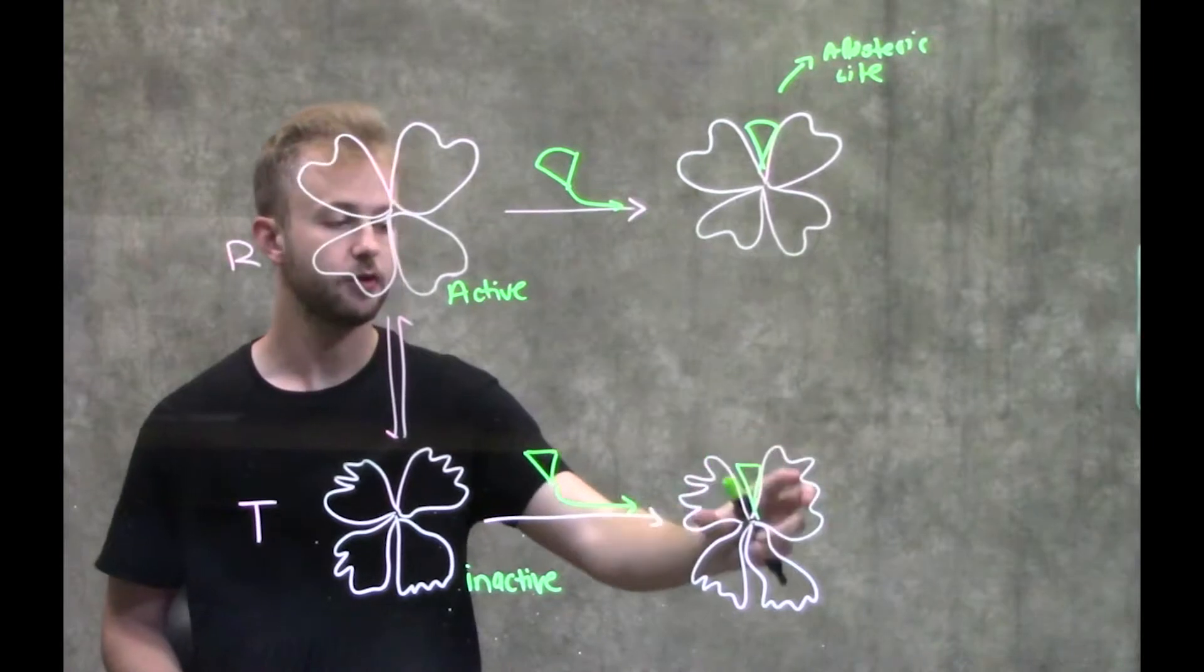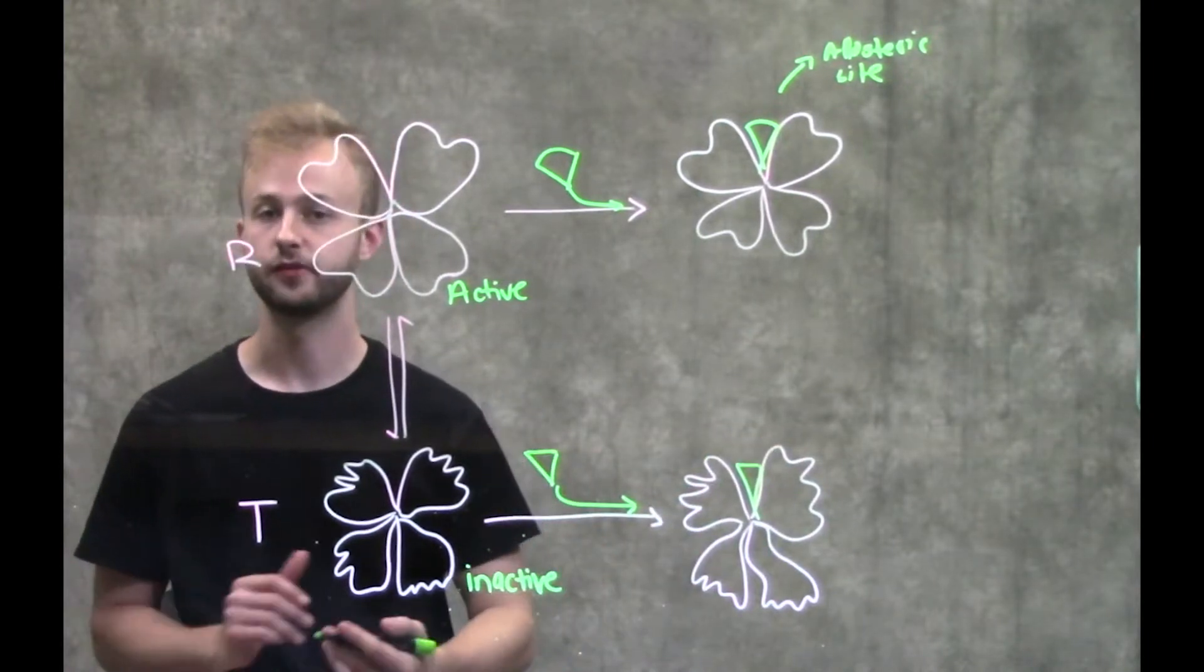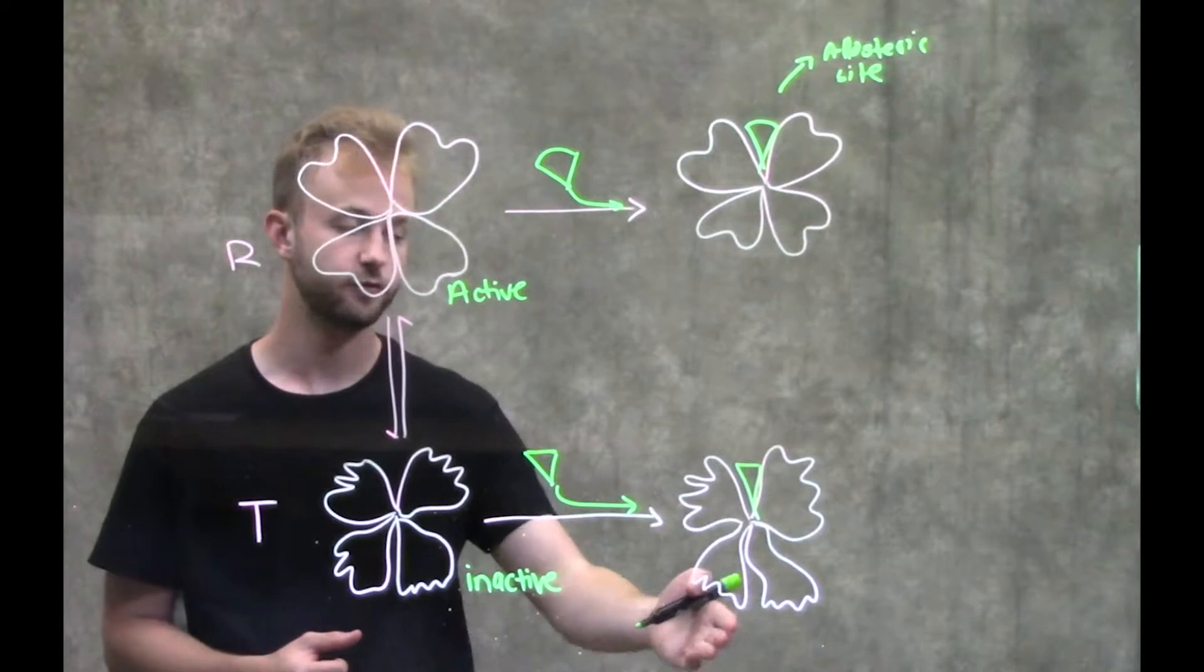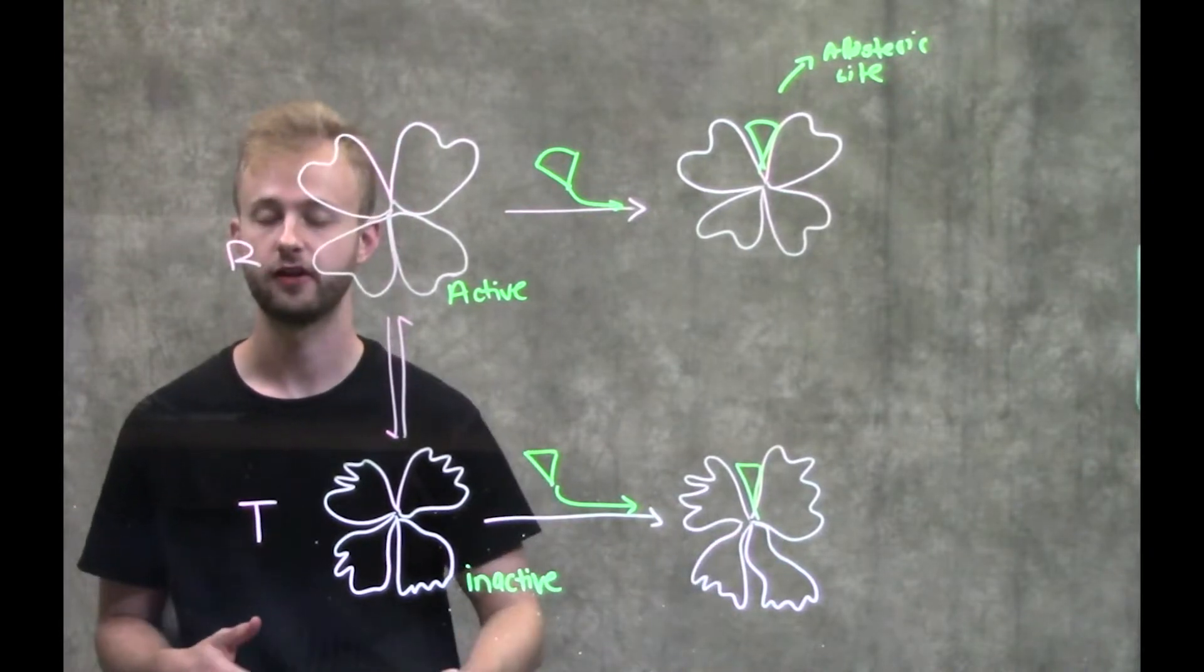When this binds, it's going to keep all of these subunits in a form that makes it really hard for them to bind to the substrate and therefore preventing this enzyme from carrying out its function.